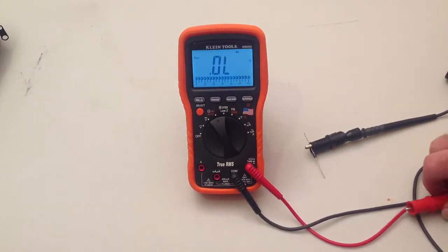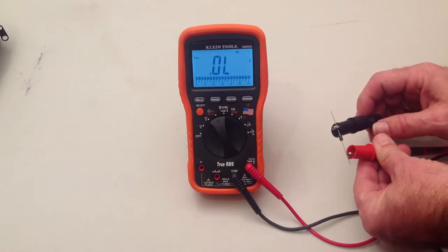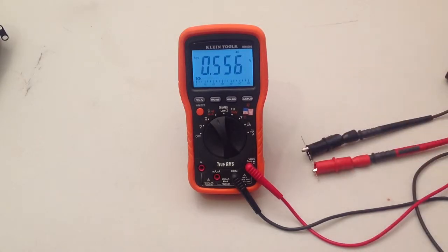What you're doing when you're testing a diode is the meter is actually trying to put voltage through the diode, and it measures what the voltage drop is across that diode.